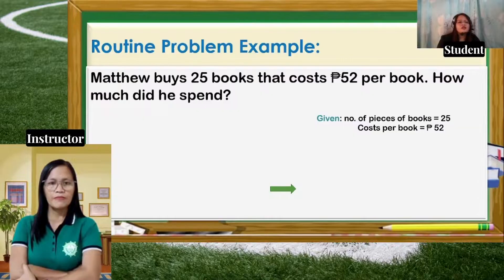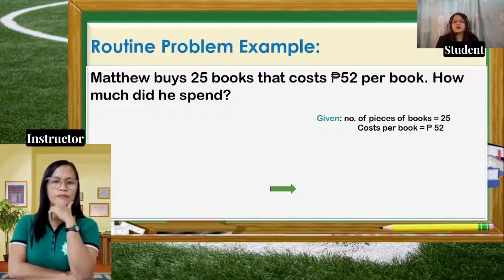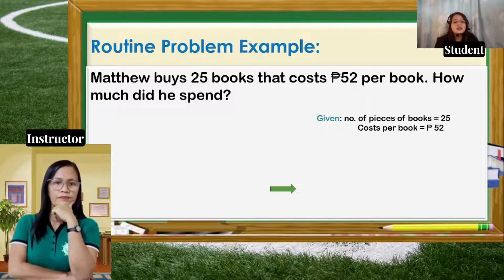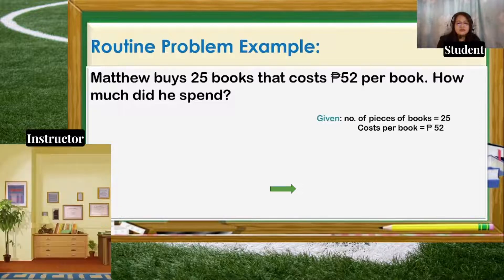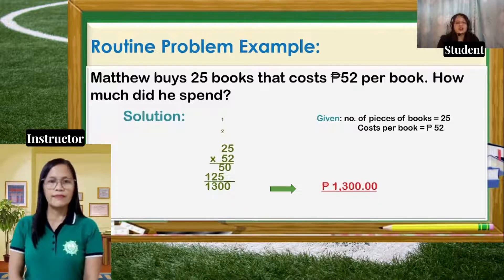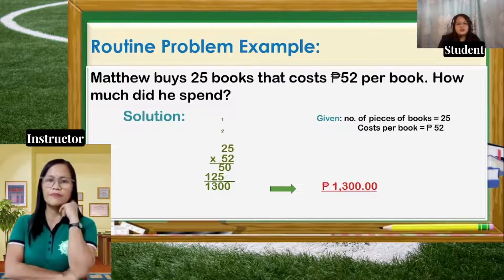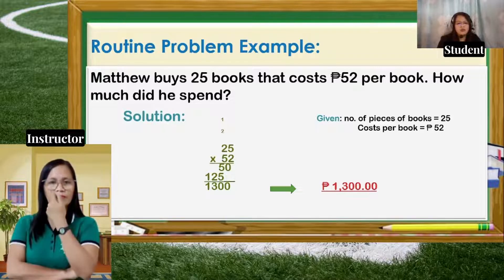Now let's have each example. First, the routine problem example: Matthew buys 25 books that cost 52 pesos per book. How much should he spend? The given are 25 books and 52 pesos per book. What is asked is the total Matthew spent for 25 books. The operation we'll use is multiplication: 25 times 52 pesos equals 1,300 pesos. So Matthew spent 1,300 pesos for 25 books.